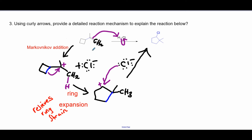Apply Markovnikov's rule: this sp2 carbon has two hydrogens and the other has none, so the hydrogen of the acid ends up on the carbon with two hydrogens. The purple hydrogen from the acid goes there, and the other carbon gets a plus sign — a tertiary carbocation. However, in this rare case the molecule wants to form a secondary carbocation to relieve ring strain, so the bond in blue stretches to migrate the plus sign outward, expanding the ring.